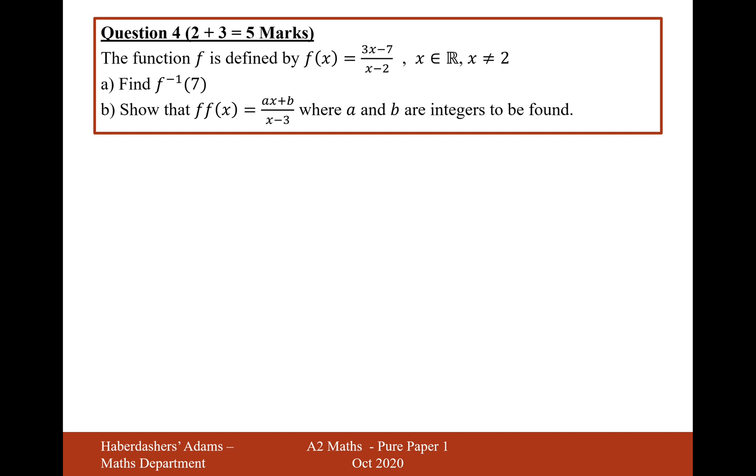Show that f of f of x is equal to ax plus b over x minus 3, where a and b are integers to be found. Okay, so that's putting the function back into its function again. So, f of f of x is going to be f of 3x minus 7 over x minus 2.